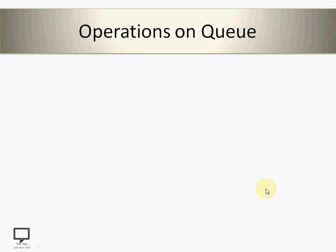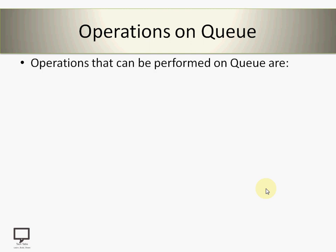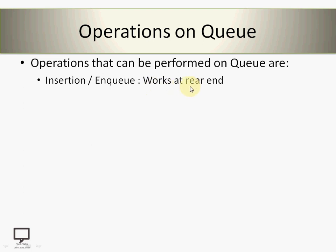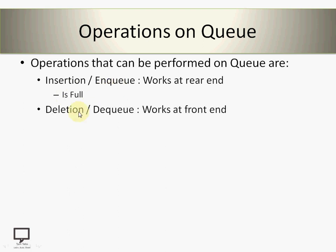Let's look at the operations that can be performed on a queue. The first operation is insertion, also called the enqueue operation. The insertion operation is performed at the rear end of the queue. While performing the insertion operation, we need to check whether the queue is full or not — if the queue is already full, we cannot perform insertion because there is no space available. If the queue is not full and space is available, then we can perform the insertion operation.